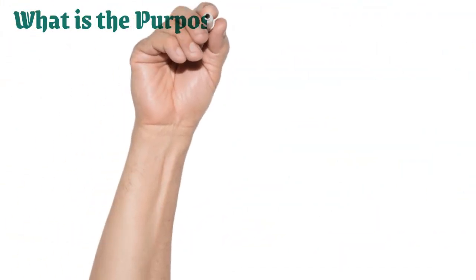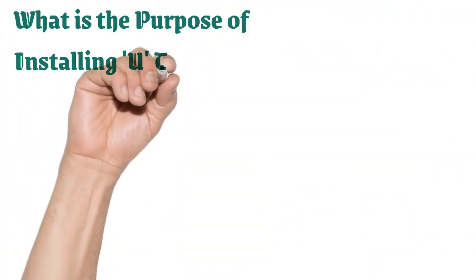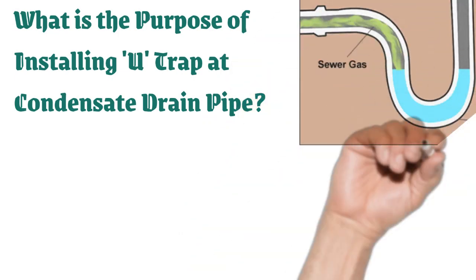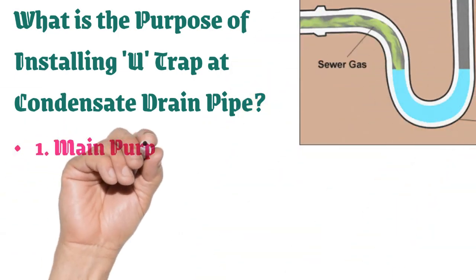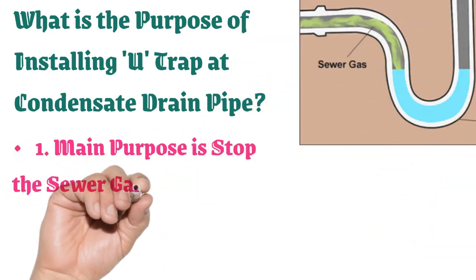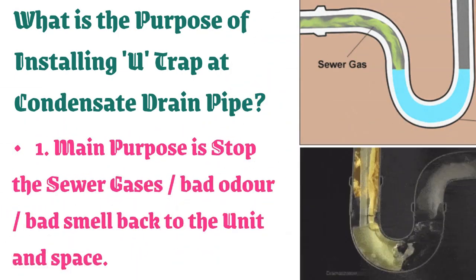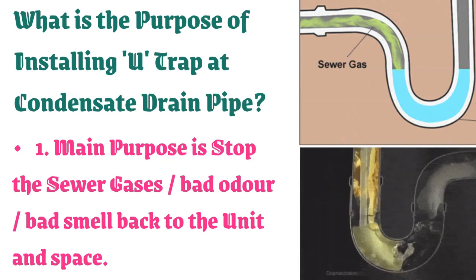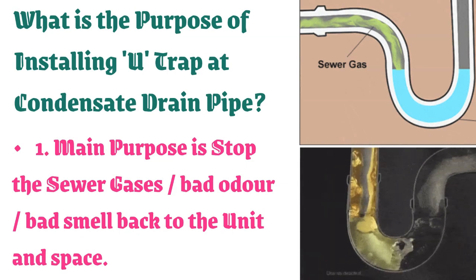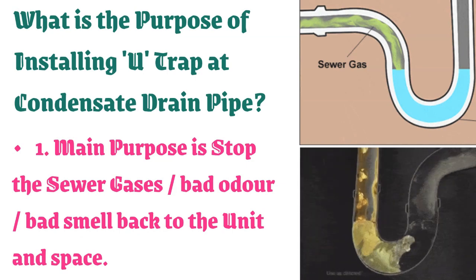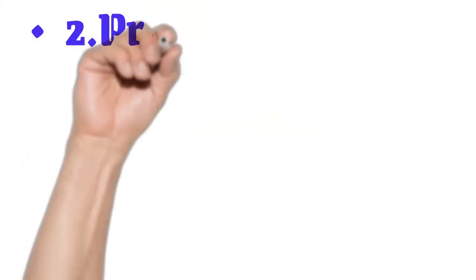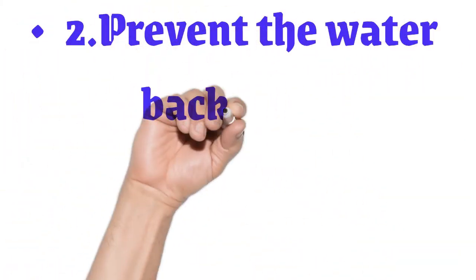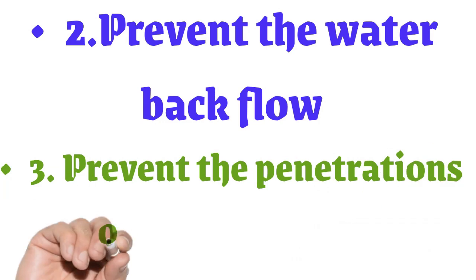First, we see what is the main purpose of installing a U-trap at the condensate drain pipe. One: to stop sewer gases, bad odor, and bad smell from coming back to the unit and space. Two: to prevent water backflow. Three: to prevent penetration of any insects.